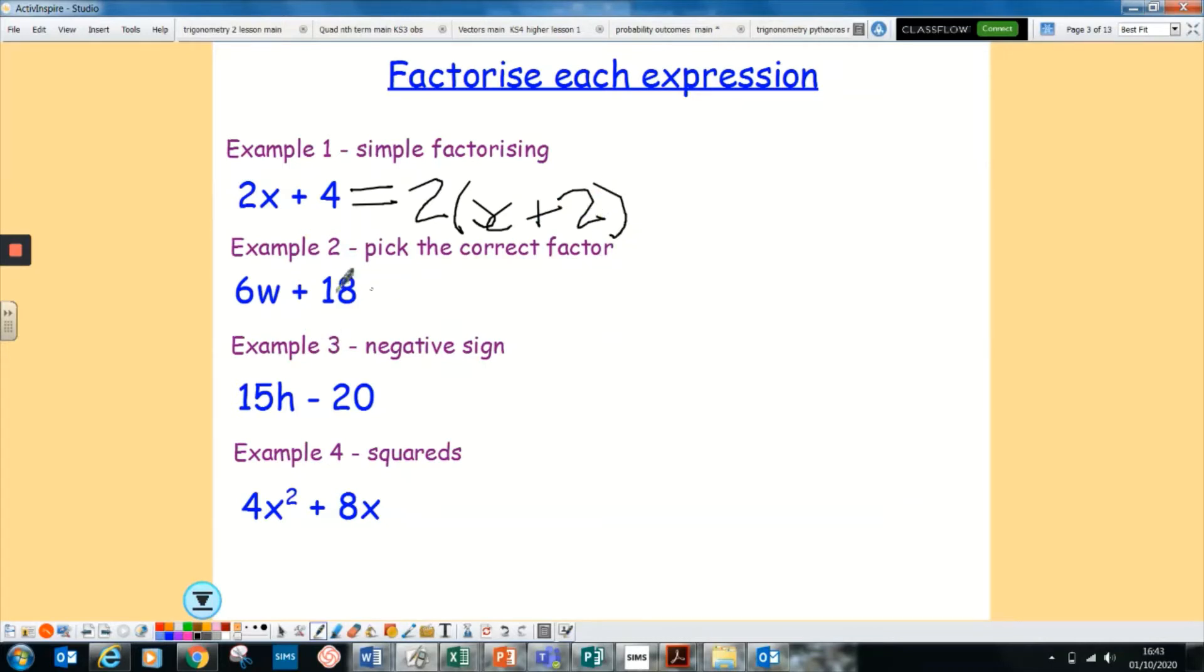If we're looking at this next one, again you need to make sure you pick the correct factor. Because obviously you've got 3 that goes into both, but 6 is the largest number that goes into both. So it will be 6. And then how do you go from 6 to 6w? And how do you go from 6 to 18? Be a positive 3.